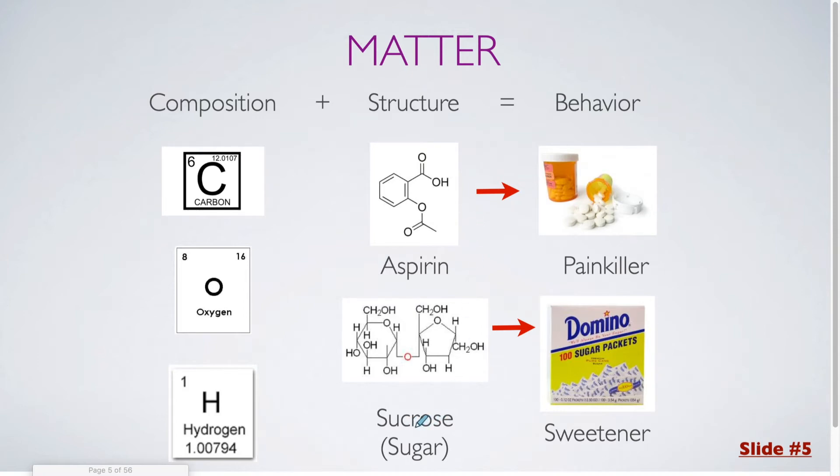Whereas here for sucrose, which is a type of sugar, you have two separate rings which are both connected by this oxygen in the middle. So the fact that these have the same exact elements in it doesn't necessarily mean that they're going to behave in the same exact way or be used for the same thing. Because the structure is different, one is going to end up being a painkiller, whereas the other is going to be a sweetener.